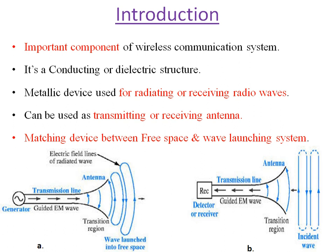At the transmitter side the antenna acts as a transmitting antenna, and at the receiver side it acts as a receiving antenna. There is a matching between the free space and the wave launching system. In diagram A you can see that at the transmitter side the source generator generates a signal, passed through transmission lines, and with help of a waveguide the antenna radiates or launches waves into the space. In diagram B the receiver antenna receives the signals, passing through transmission lines for detection.